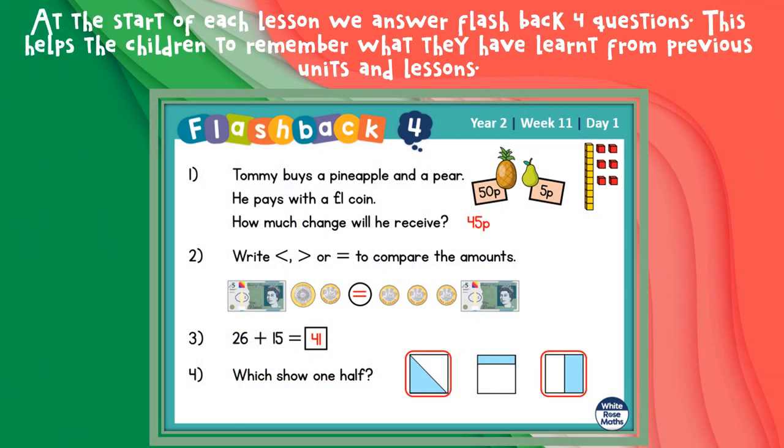At the start of each lesson we answer flashback four questions on whiteboards. This helps the children to remember what they have learned from previous units and lessons. The children have a mini competition and each child that gets five out of five gets a dip in the box.